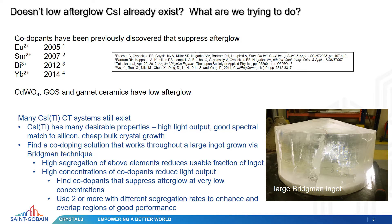People in the know might ask, doesn't low afterglow cesium iodide already exist? Well, yes — there have been co-dopants previously discovered that suppress afterglow, with research going back over 16 years. Europium, samarium, bismuth, and ytterbium have all been identified as being able to suppress afterglow if added in small quantities to cesium iodide.